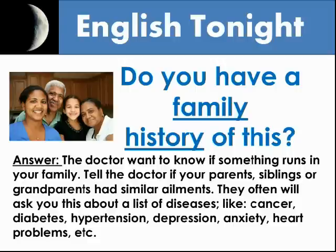Question 7: Do you have a family history of this? The doctor would like to know if this runs in your family — whether your parents, siblings, or grandparents have had a similar ailment. They often ask about a specific list of diseases, such as: do you have a family history of cancer? Do you have a family history of diabetes? Answer the best you can, and if you do not know, you can tell them you will check and get back to them later.